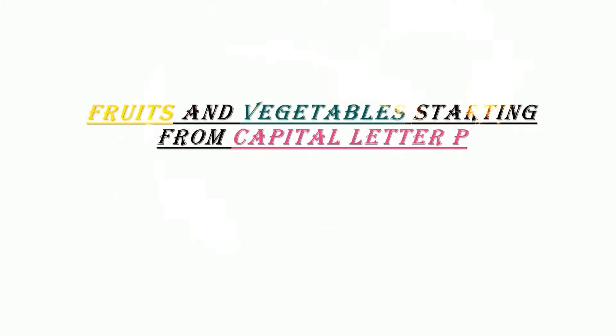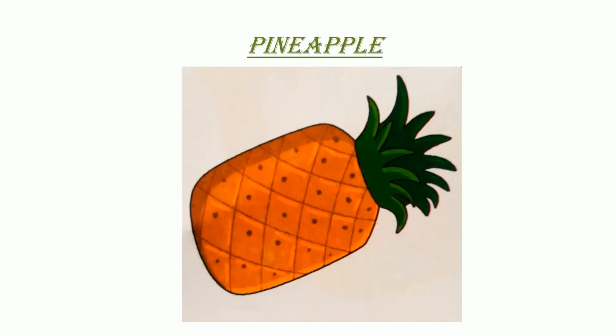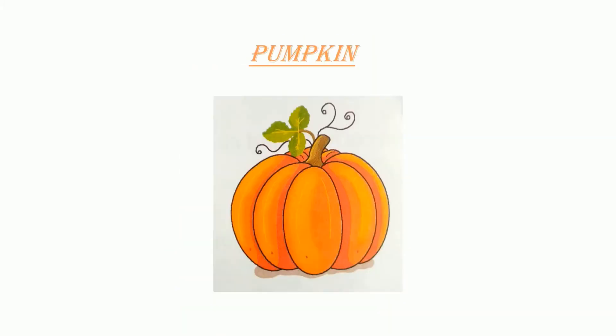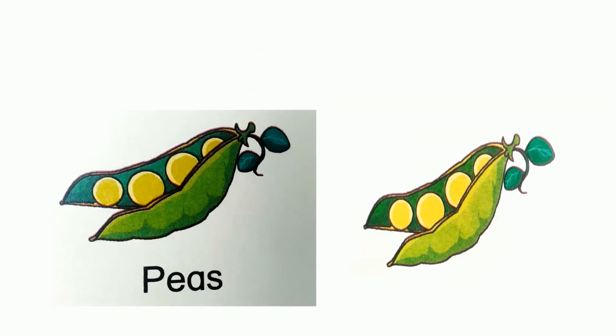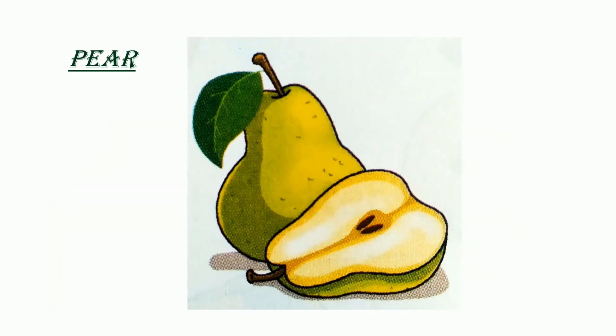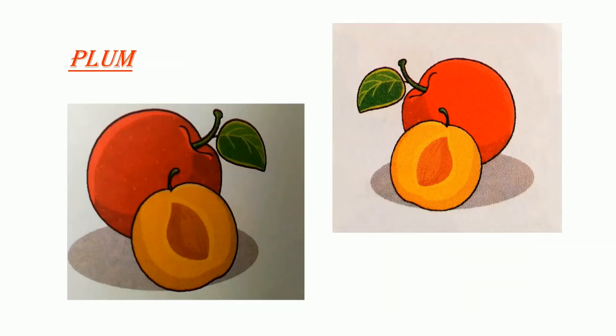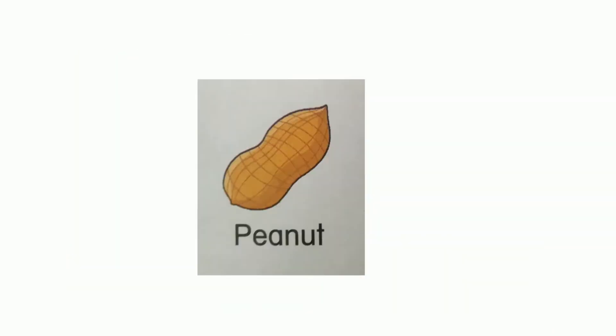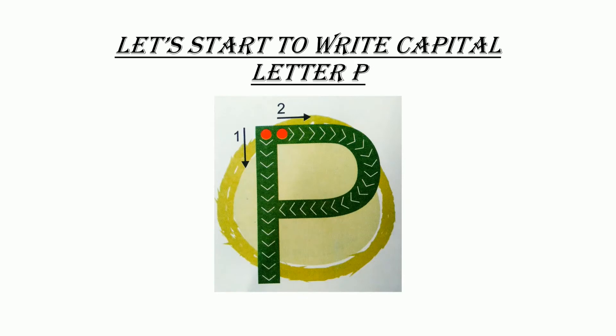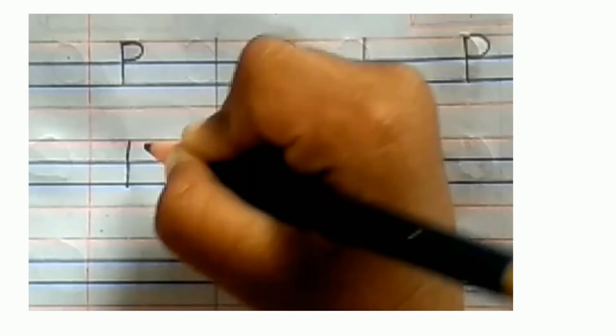Let's learn fruits and vegetables. P for pineapple. P for pumpkin. P for papaya. P for peas. P for pear. P for plum. P for peanut.